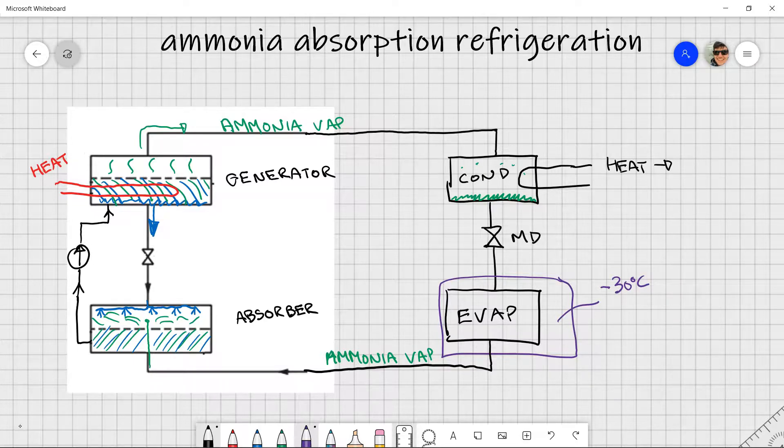So we have sort of this circulation of water and when it's down at the bottom in the absorber it's absorbing ammonia vapor and becoming a more concentrated ammonia mixture, and then it's pumping it up to the top where we drive off some of the ammonia by adding heat and that creates a weaker water mixture.